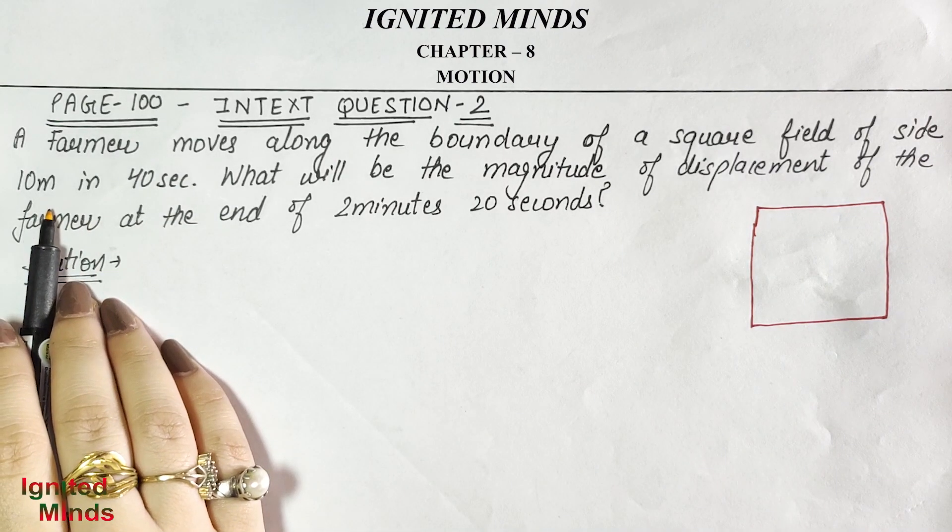What will be the magnitude of displacement of the farmer at the end of 2 minutes and 20 seconds? We need to find displacement. I will also show you the distance for comparison. First, we convert 2 minutes and 20 seconds into seconds, because we have 40 seconds given.